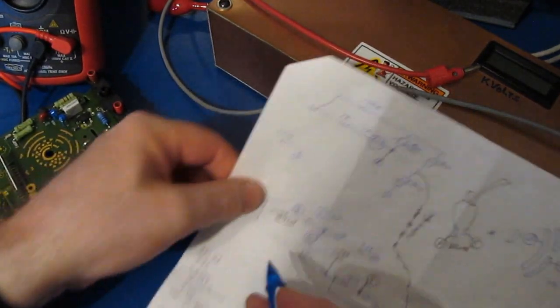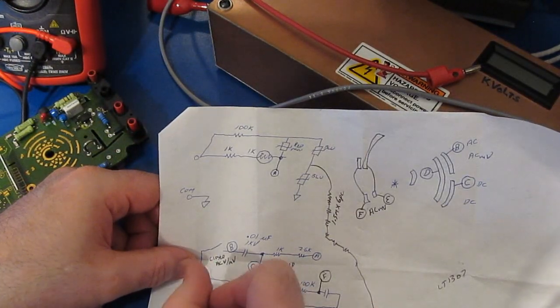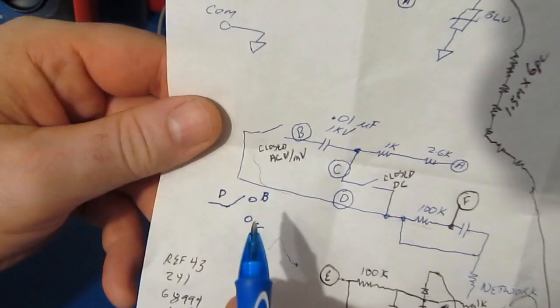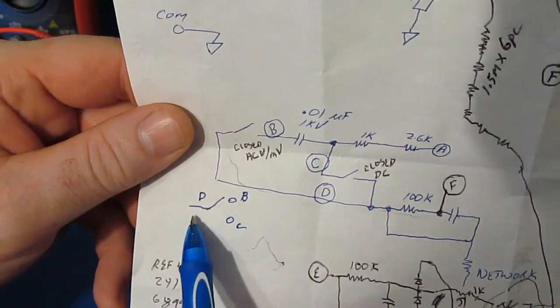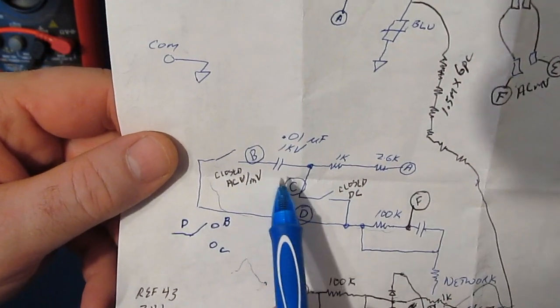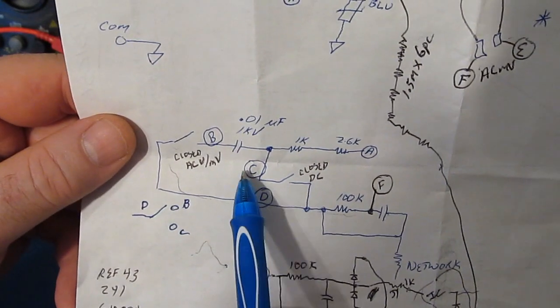You could look at this as a single pole double throw switch like this, where contact D is either selecting B or C. If it's in the B mode we are AC coupling the input, and if it's on the C mode we're DC coupling the input.